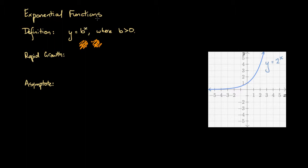We call it an exponential function because the independent variable is an exponent. This functional form is associated with rapid growth, as we can see in this graph. On the right-hand side of the origin, we've got this interesting feature where the graph shoots up such that it looks like it's going very rapidly upwards.